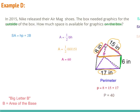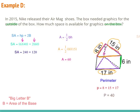Now that we have big B, the perimeter, and the height, we have everything for the formula. We have 6 times 40 for the height times perimeter, plus 2 times 60. Following order of operations, we multiply first: 6 times 40 gives 240 and 2 times 60 gives 120. Then 240 plus 120 gives us 360 square inches, since we're talking about surface area.